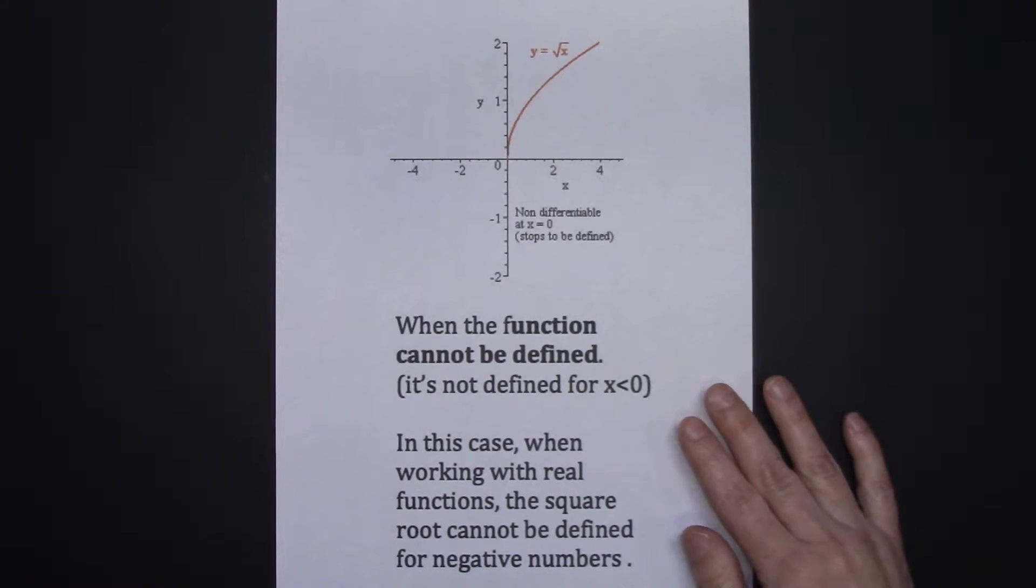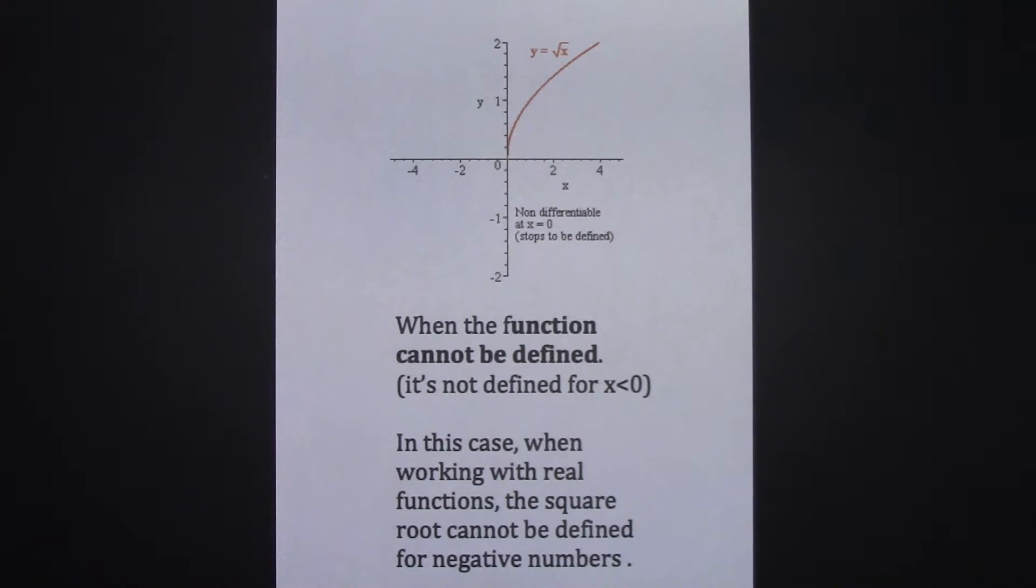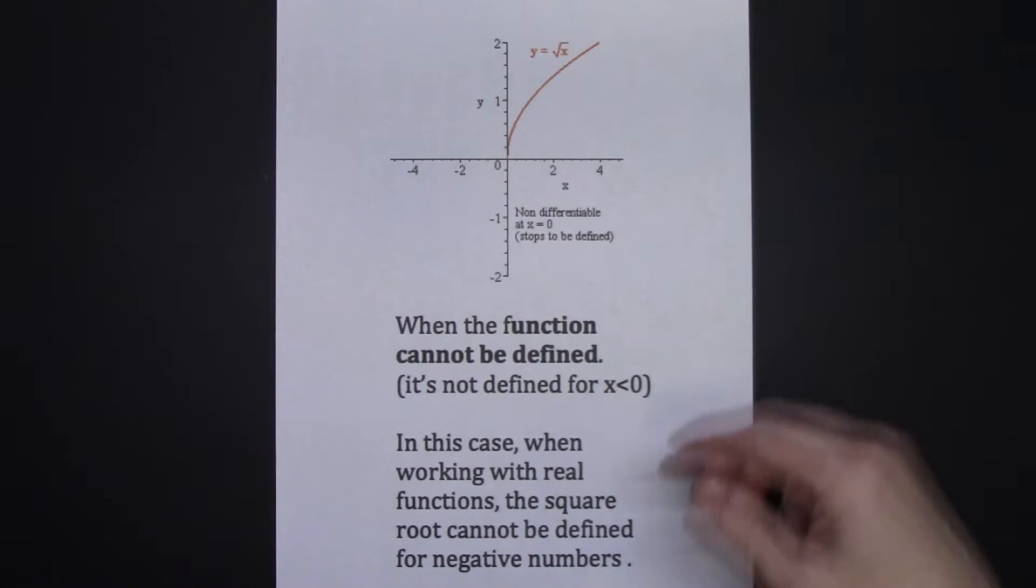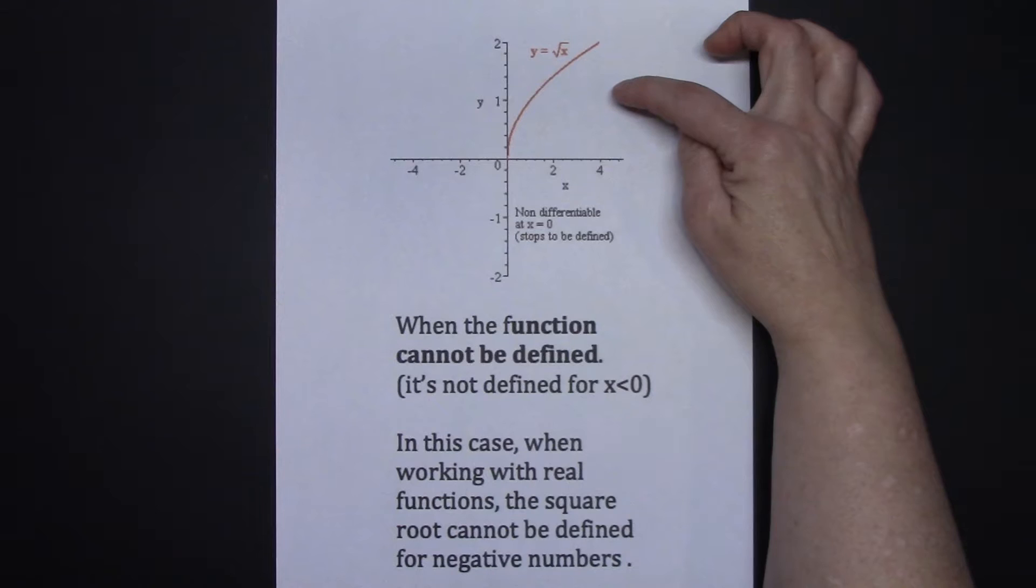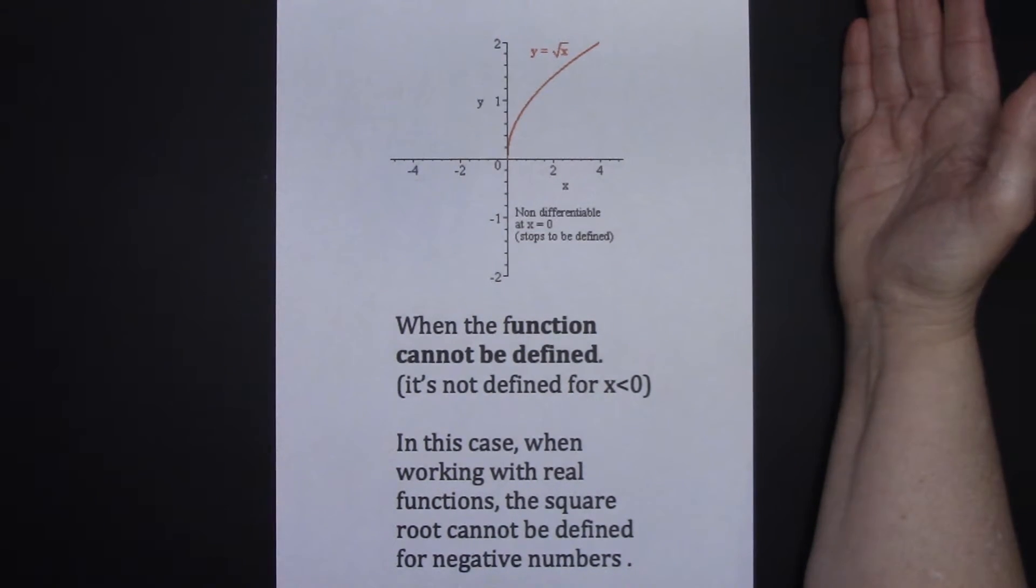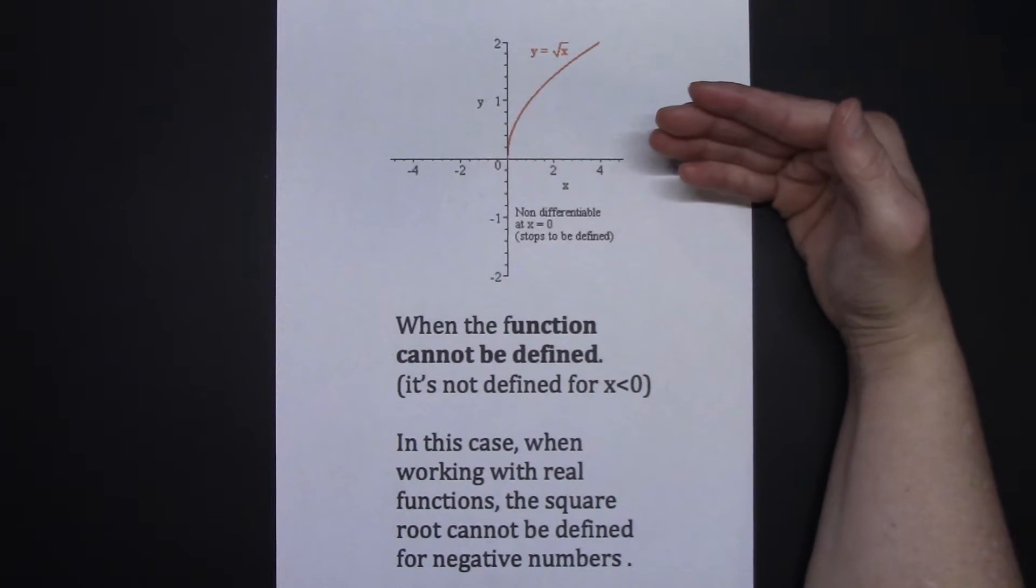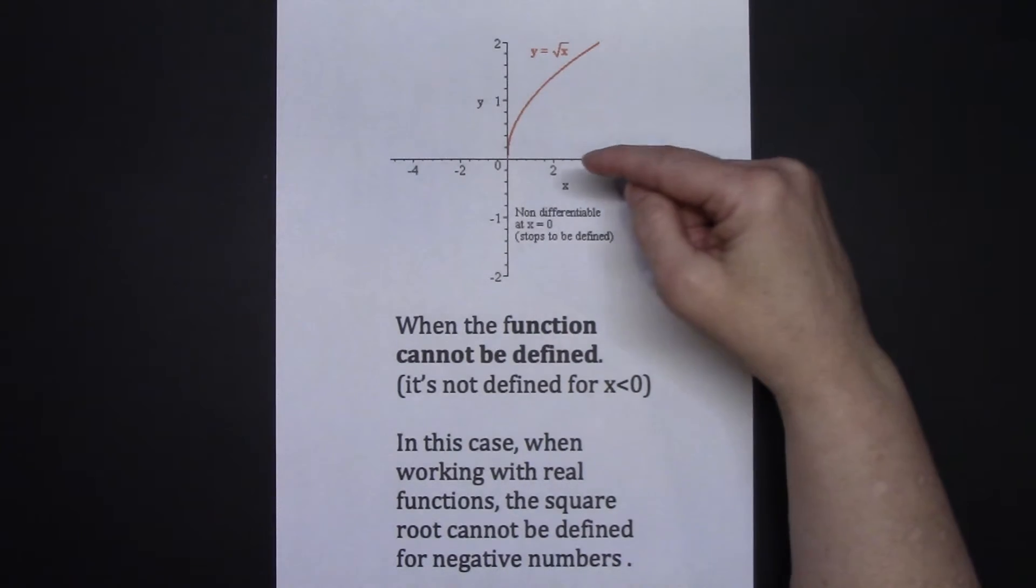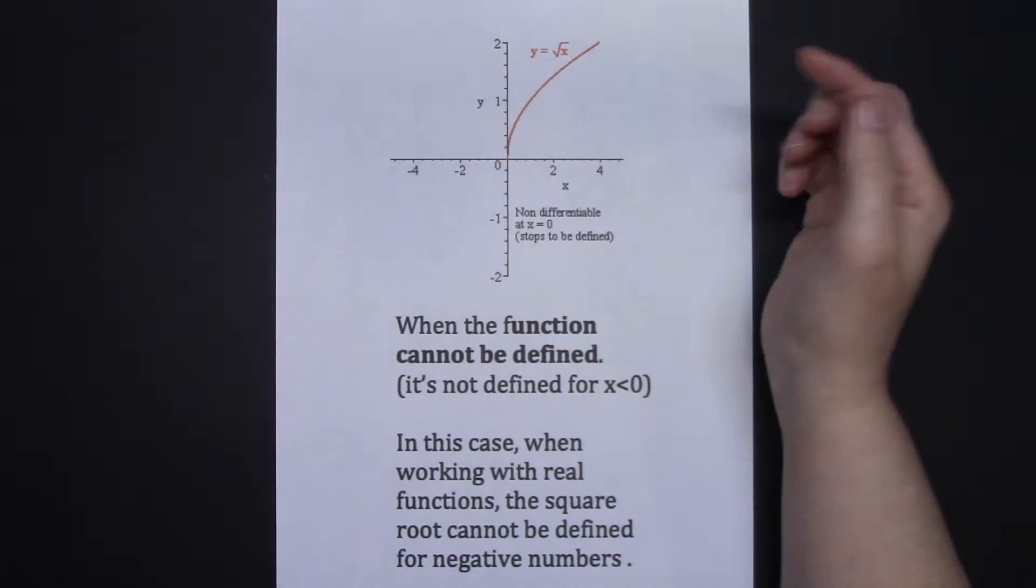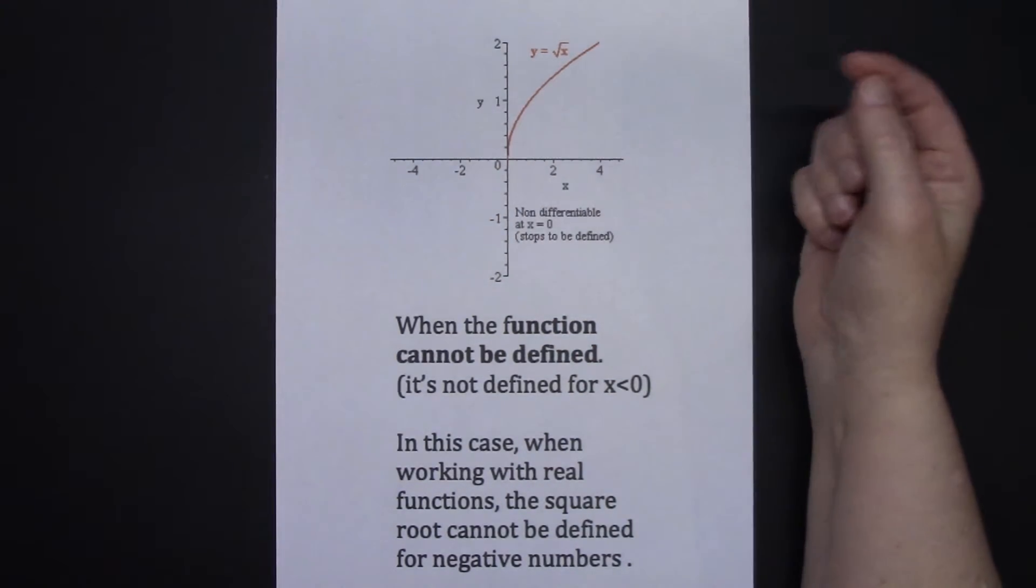In the next example, when the function cannot be defined, then the derivative cannot exist. So for this example, I've got y equals the square root of x. So in working with real functions, the square root function cannot be defined for negative numbers, so therefore the derivative would not exist for anything x less than 0.